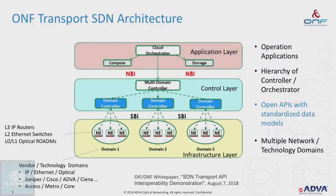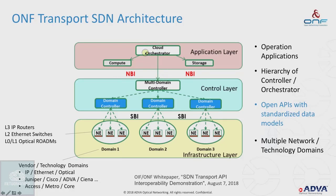The architecture has at the lowest infrastructure layer the network elements: IP routers, Ethernet switches, and ROADMs — reconfigurable optical add-drop multiplexers — across different technology and vendor domains. In the control layer, you have a hierarchy of domain controllers, where a domain controller is responsible for one domain, subtended to a multi-domain controller, which can be integrated into a cloud orchestrator taking into account compute and storage resources. The main points are the hierarchy of controllers with open APIs and standardized models.